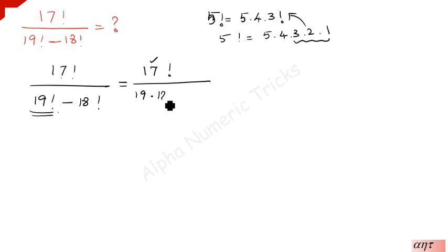So 19 times 18 times 17 factorial minus the same way, 18 factorial can be written as 18 times 17 factorial. Now, which is common? 17 factorial is common.